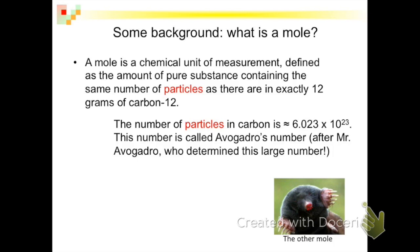In this pure substance, there are 6.023 times 10 to the 23rd atoms, or particles. This number is called Avogadro's number because it was named after the Italian Avogadro who determined it. The number of atoms in that much carbon is this exact number.